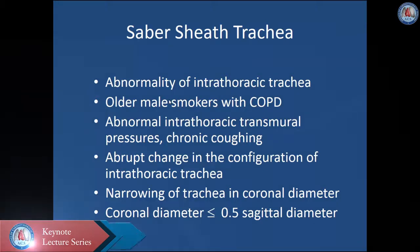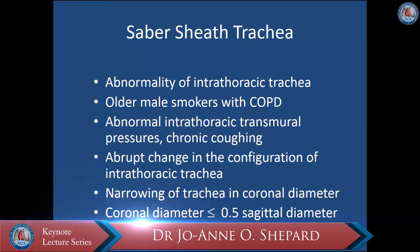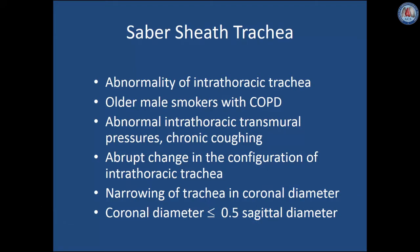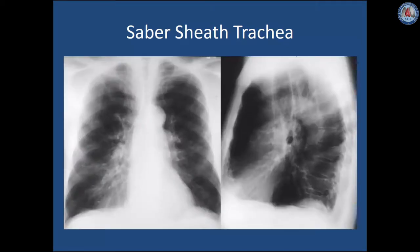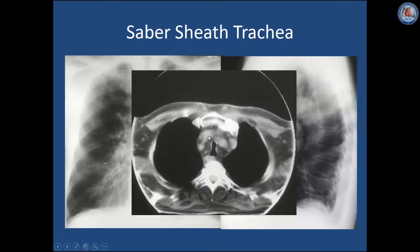A saber sheath trachea is an abnormality of the intrathoracic trachea seen in older male smokers typically with COPD. It results from abnormal intrathoracic transmural pressures and chronic coughing, causing an abrupt change in the configuration of the intrathoracic trachea that begins at the thoracic inlet and extends to the carina. The narrowing occurs transversely and is best seen in the coronal or axial planes; the coronal diameter will be less than one half the sagittal diameter. In this patient with saber sheath trachea, notice the diffuse transverse narrowing beginning at the thoracic inlet.